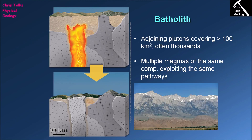Here we can see an example — mountainous terrain representing the Sierra Nevada Batholith of California. All of this medium grey rock making up the mountainous terrain is granite or other similar felsic plutonic igneous rocks, formed by multiple intrusions all entering the same area of the Earth's crust one after another. Thank you for watching everybody, and have a good day.